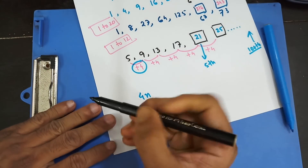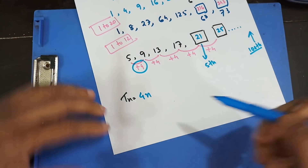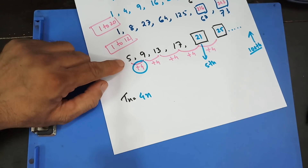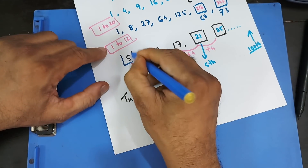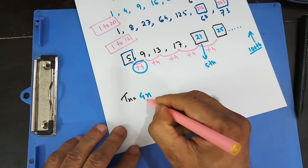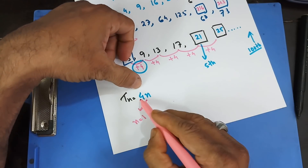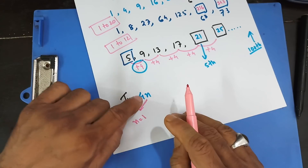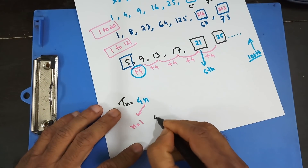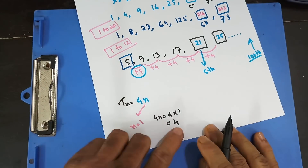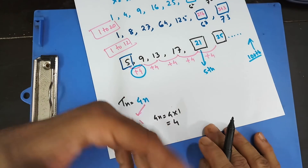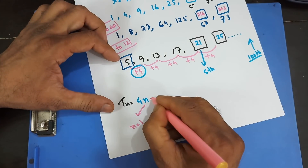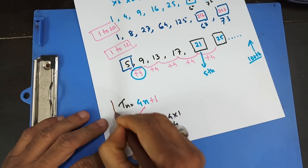So 4n is our nth term candidate. Remember we're trying to find the nth term — any term of the sequence. Take the difference, multiply by n. Now look at the first term. If n equals 1, then 4 times 1 is 4. But the first term is 5, which is greater than 4. By how much? By 1. So you add 1 to get the nth term formula: 4n + 1.